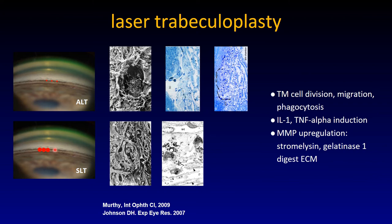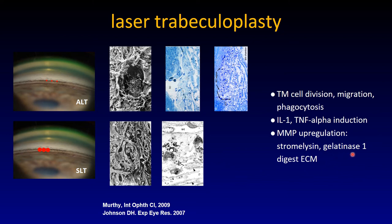SLT has larger spots — around 200 to 300 microns — placed next to each other along the meshwork. You don't see anything in electron microscopy. It is called selective laser trabeculoplasty because this laser is absorbed primarily by pigment. The biological effect is TM cell division, migration, and phagocytosis — which sounds similar to what Rho kinase inhibitors do — but there are also inflammatory substances. TNF-alpha is induced, and most of all, matrix metalloproteinases are upregulated that break down extracellular matrix, in particular stromelysin and gelatinase-1.